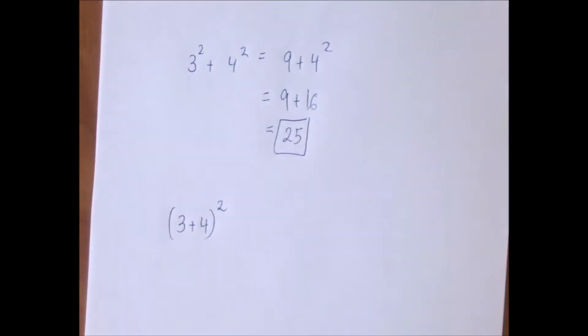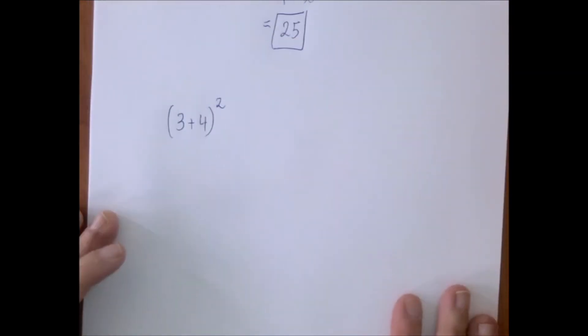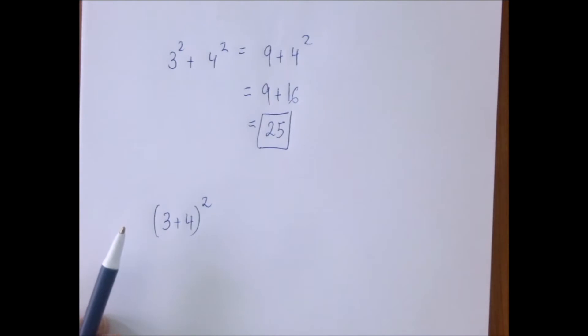We square 3 and 4, then add. But that's not what happens here. Because of the parentheses overriding the default order of operations, we have to square whatever is inside the parentheses, and that needs to be a number first before we can square it.